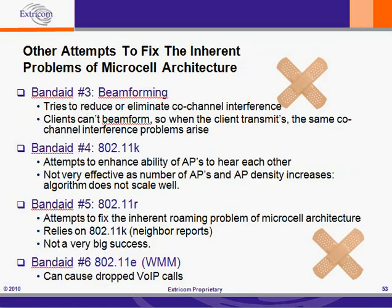Band-Aid number three is beamforming. Beamforming tries to reduce or eliminate co-channel interference. However, clients can't beamform, so when the client transmits, the same co-channel interference problems arise.